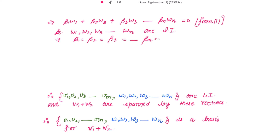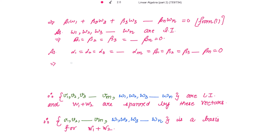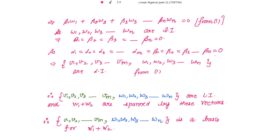So as alpha1, alpha2, alpha3, ..., alpha_m and beta1, beta2, beta3, ..., beta_n — all scalars are 0 — this implies, from equation 1, that v1, v2, v3, ..., vm, w1, w2, ..., wn are all linearly independent. We can mark this as equation 2.